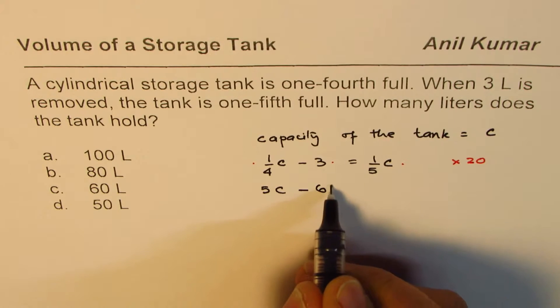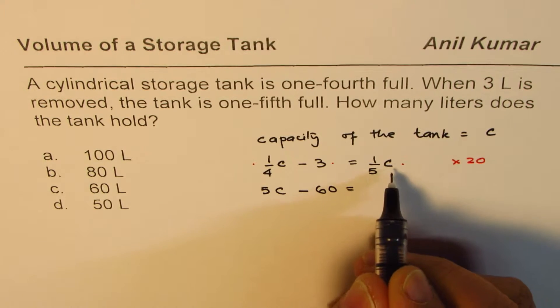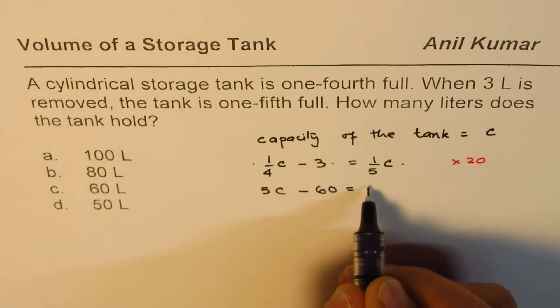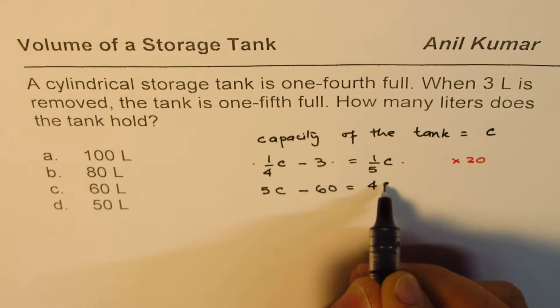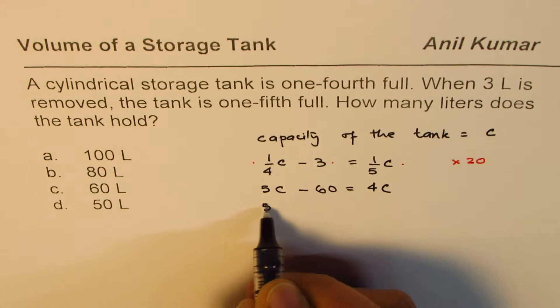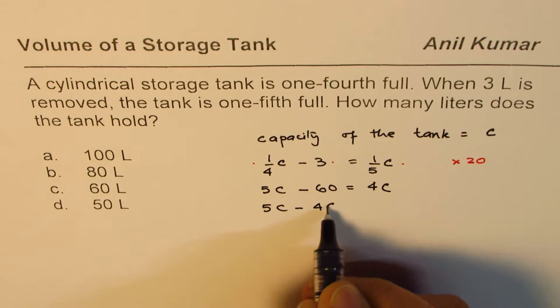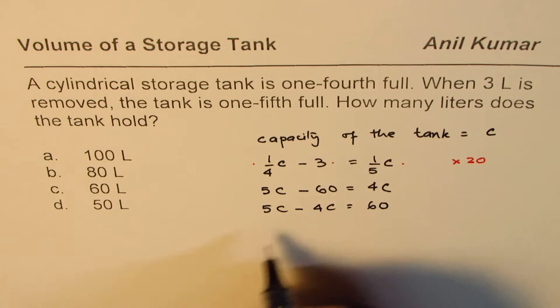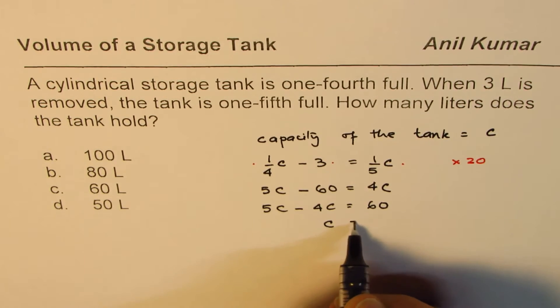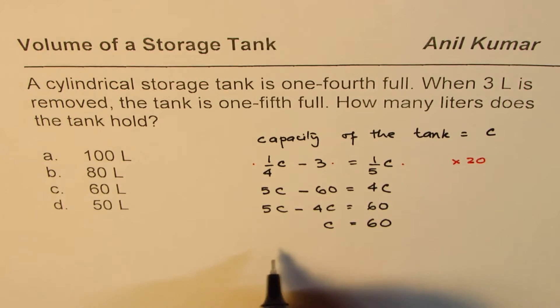And 20 times C divided by 5 will give us 4C. Now rearrange: 5C minus 4C equals 60, and that is C equals 60. So the capacity is 60 liters. Option C is the right option.